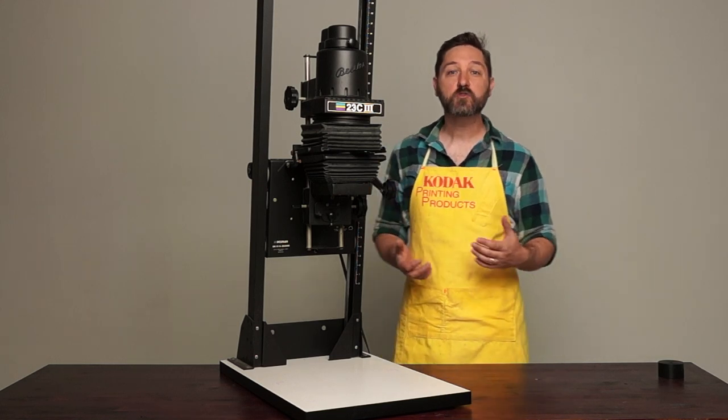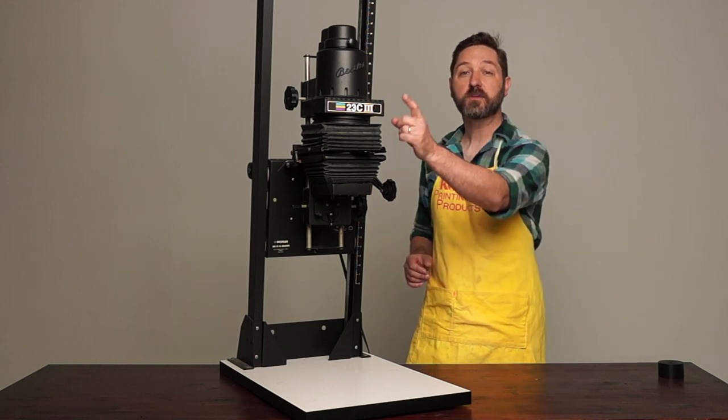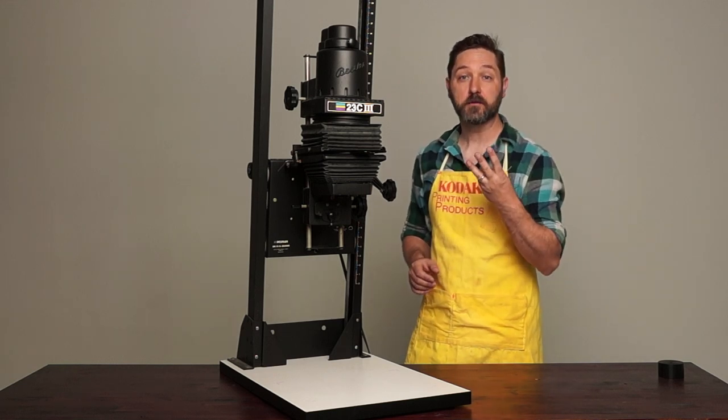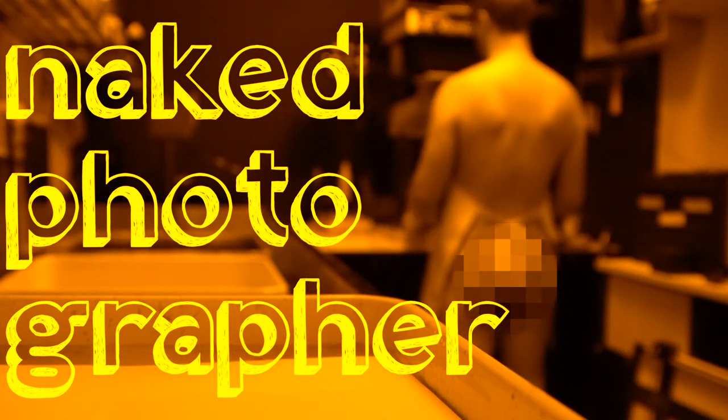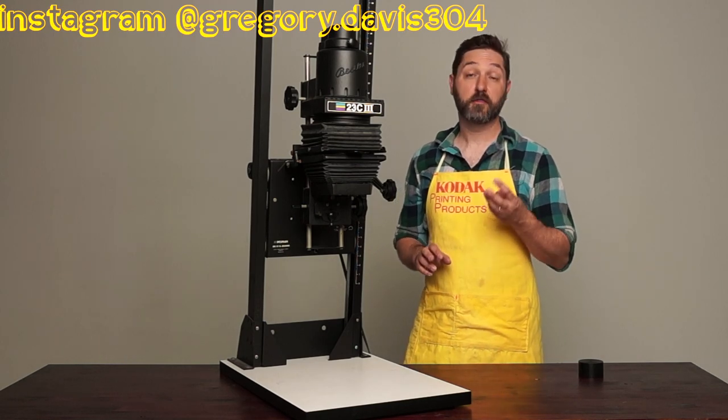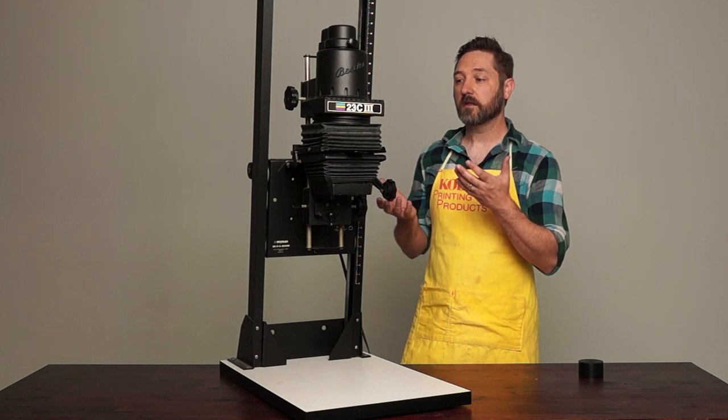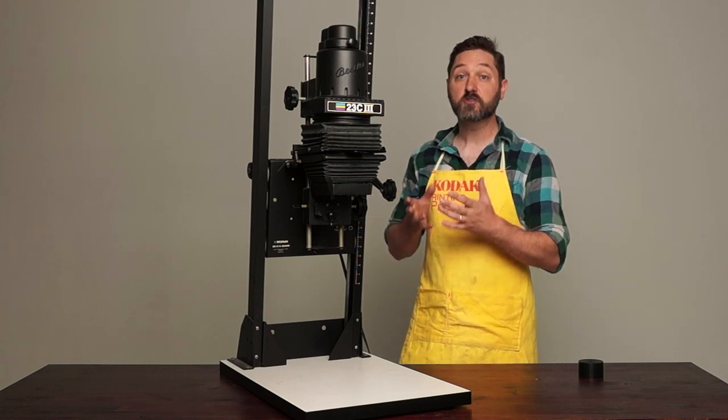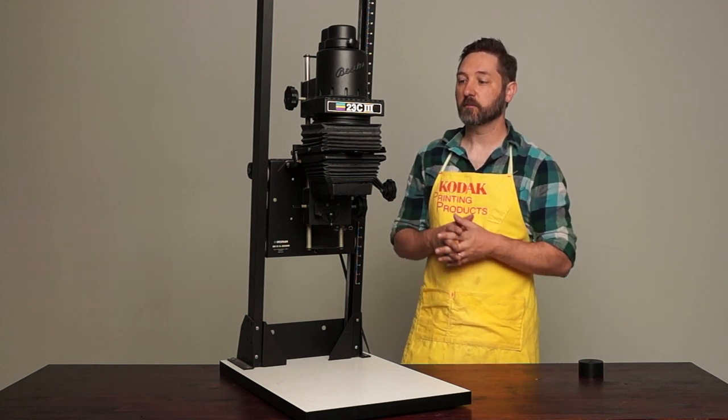Welcome back to our series on how to align your enlarger. Today we're looking at the Bessler 23C3. The Bessler 23C3 is an improvement on the previous version in that it's easier to align. They have given us a few more alignment points and it becomes a much easier process.